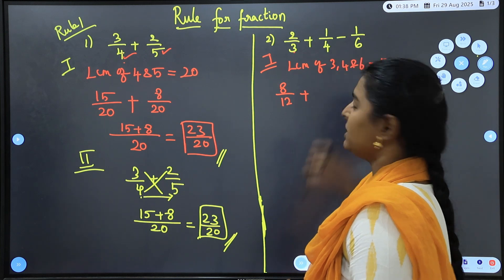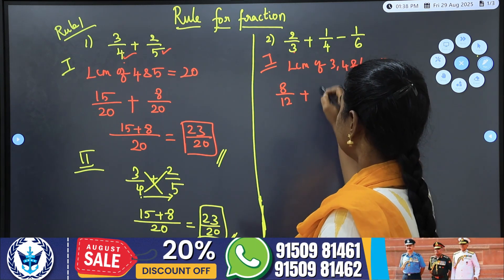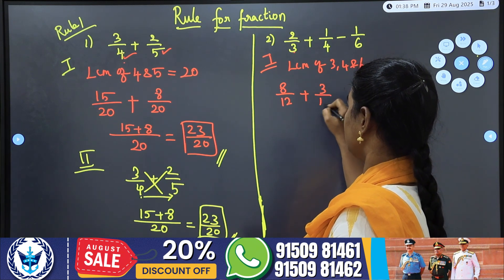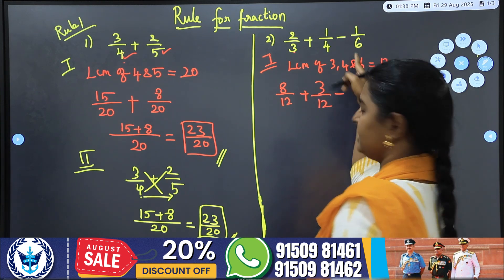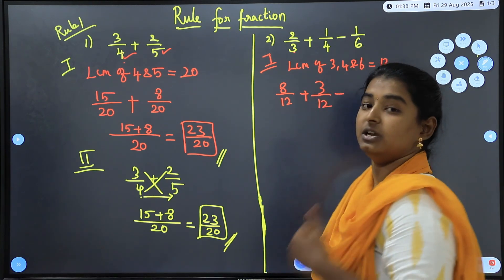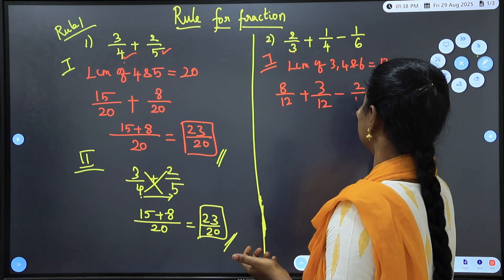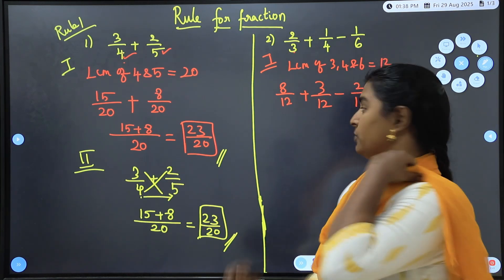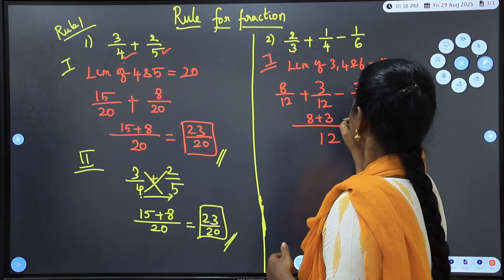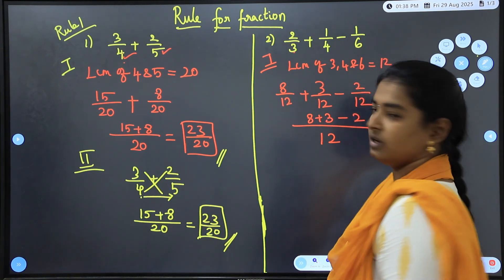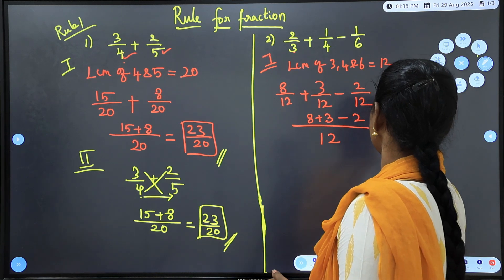Then plus sign: for 1/4, multiply by 3, giving 3/12. Then minus sign: for 1/6, multiply by 2, giving 2/12. Now the common denominator is 12, so: 8 + 3 − 2 = 9. The answer is 9/12.